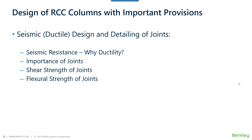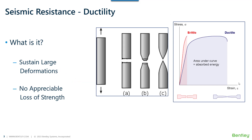Before we start to understand the importance of joint checks, we will understand what ductility is. Ductility is nothing but the capacity of a material to sustain large deformations before it actually breaks or reaches its breaking point. Most importantly, in this process there is no loss of appreciable strength, and as a result the structure absorbs a huge amount of energy before it actually fails or breaks.